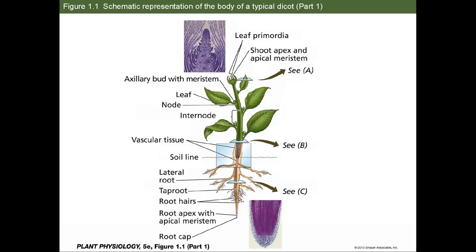We have our apical meristem at the top, and we have our axillary buds, which are meristematic, at the side of each node as well — so undifferentiated tissue also develops there. At the apex of the root zone, we also have a meristem, and that's where new root cells form.